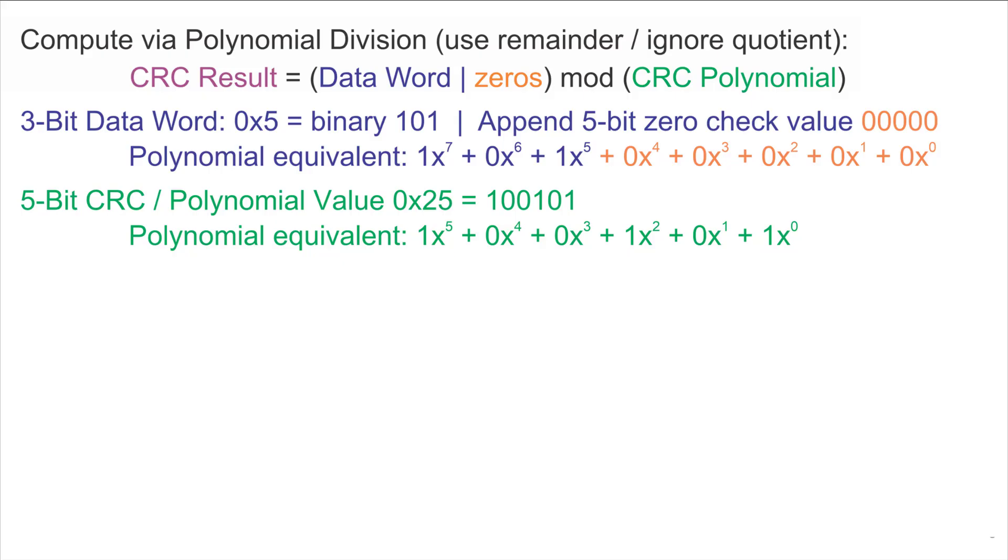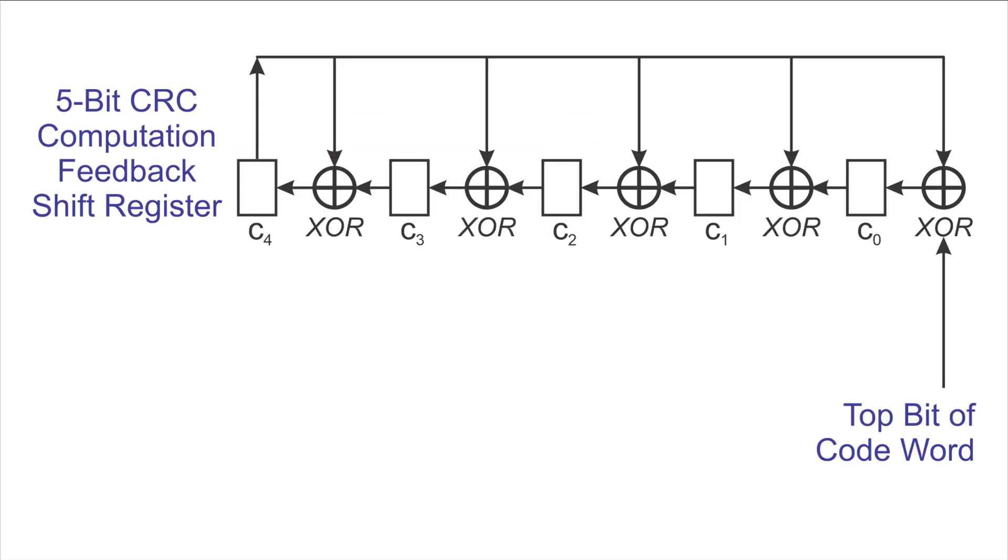Rather than using long division, this approach uses a hardware configuration that we'll spend a little time explaining the operation of. The feedback polynomial, which is the divisor for the division, is represented by the f boxes here, f5 through f0.